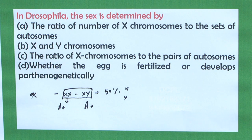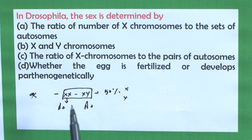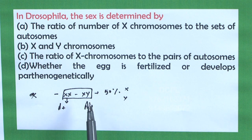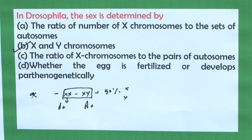In Drosophila, the sex determination is by: option A, the ratio of number of X chromosomes to the sets of autosomes; option B, X and Y chromosomes; option C, the ratio of X chromosomes to the pairs of autosomes; option D, whether the egg is fertilized or develops parthenogenetically. As shown in this example, the chromosomal basis of sex determination in Drosophila is based on X and Y, so the correct option is option B, X and Y chromosomes.